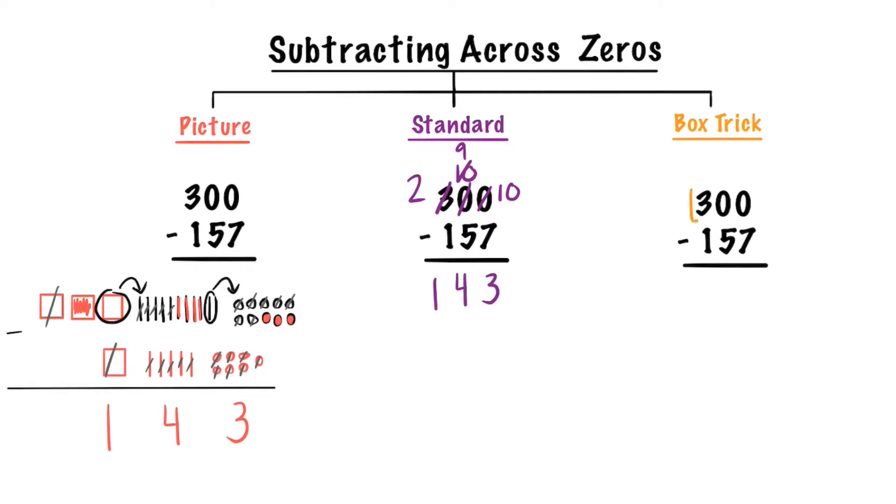Now we're going to use the box trick. We need to put a box over 30 and we're going to take away 1 which makes 29. Now we're going to add 10 more to our ones. 10 take away 7 makes 3, 9 take away 5 is 4, and 2 take away 1 is 1.